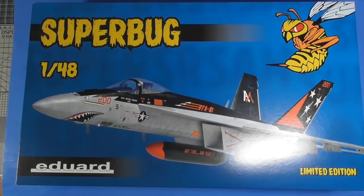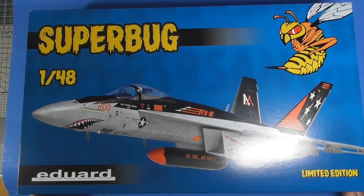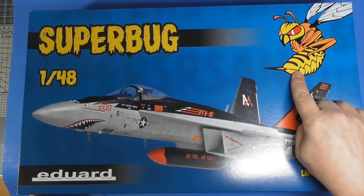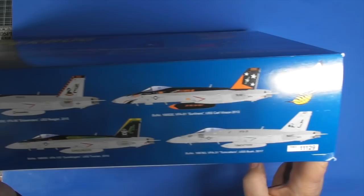Hello everybody, it's Brent once again with High Altitude Scale Modeling and another sprue review. Today we got a brand new release from Eduard, the Superbug F-18 Super Hornet limited edition. I love the artwork, a little bee, almost like the scat-packed bee on the Challengers and Chargers. Five schemes available, beautiful looking schemes. Kit number 11129.